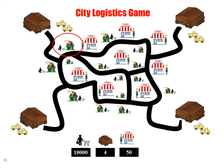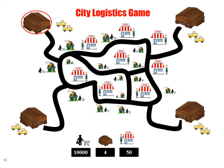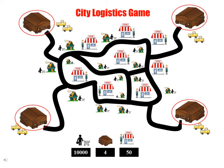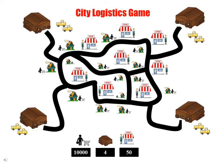The city consists of houses and people. The city has shops that sell products to people living in the city. The shops replenish their goods by ordering goods from shippers. The shippers own trucks which are used to deliver goods to the shops. There are 4 shippers and they are located in the periphery of the city. Each shop has only one shipper, but each shipper delivers goods to multiple shops. There are 50 shops, 4 shippers, and 10,000 people live in the city.